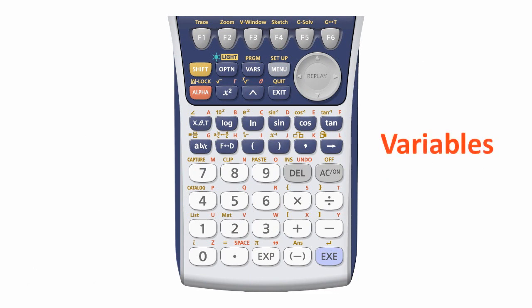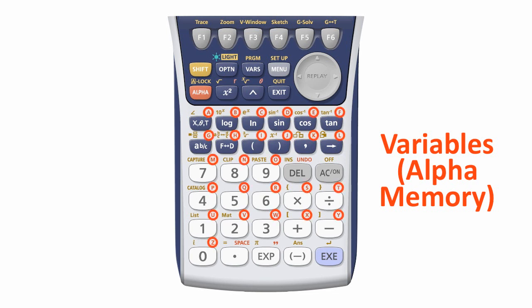The variables, also known as alpha memory, are named after these 26 letters of the alphabet plus this lowercase r and theta.